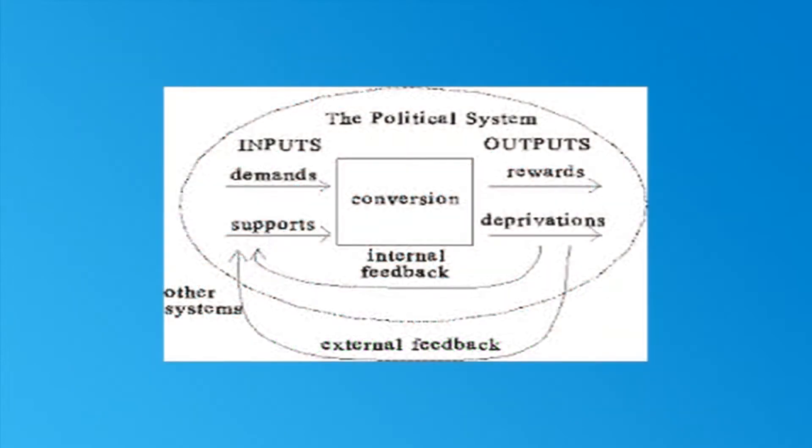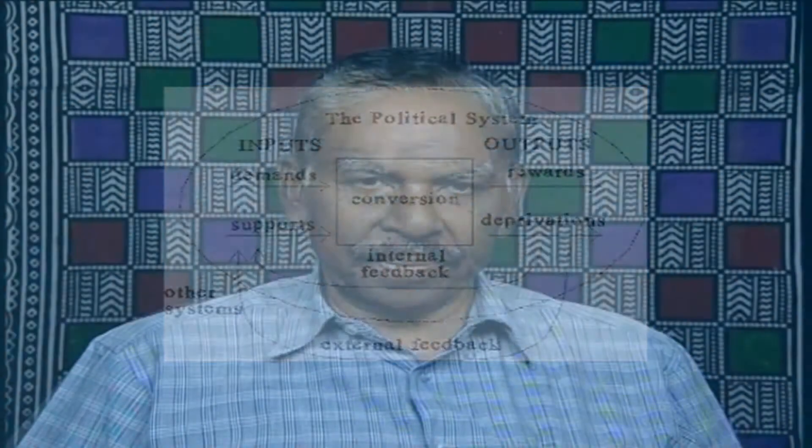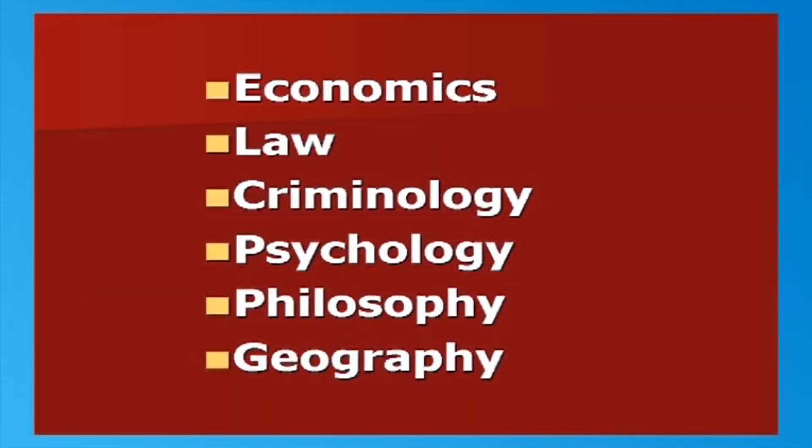The existing political system also comes under the purview of sociology. In fact, many social sciences like economics, law, criminology, psychology, philosophy, and geography owe their origin to sociology. From a criminological point of view, crimes therefore need to be understood from a sociological point of view because most crimes are considered to be social phenomena. It also implies that if crime prevention measures are to become effective, the existing social structure and social order must be reformed.